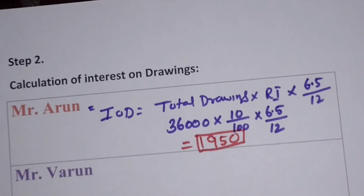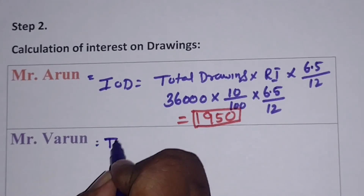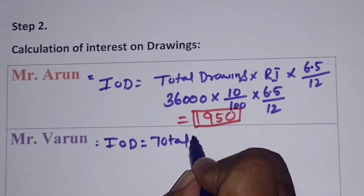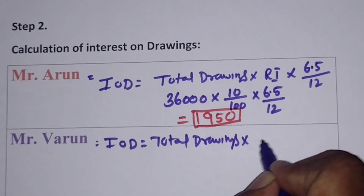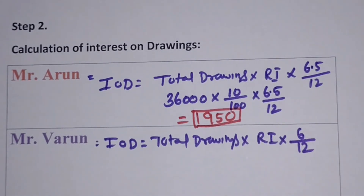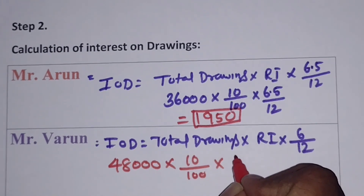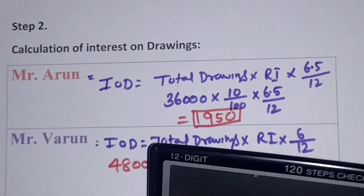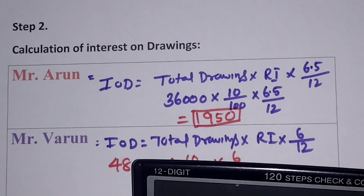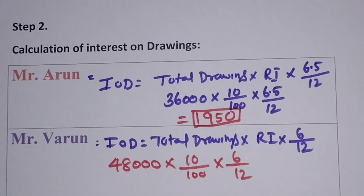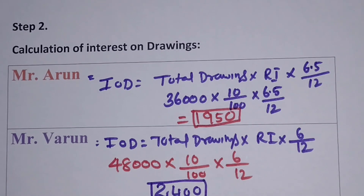For Mr. Varun, who draws on the 15th of every month: Interest on drawings = Total Drawings × Rate of Interest × 6/12 = 48,000 × 10/100 × 6/12 = Rs. 2,400.